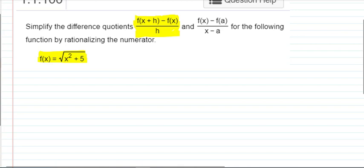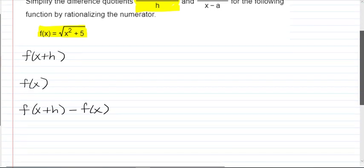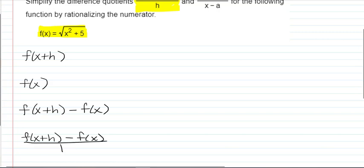So a lot of times it's helpful when evaluating or simplifying a difference quotient to break it down into parts. So I'm going to go ahead and first just figure out what f of x plus h is. And then I'm going to write down what f of x is. And then I'm going to subtract the values that I get there, or expressions that I get there. And then I'm going to take that difference and I'm going to divide it by h,